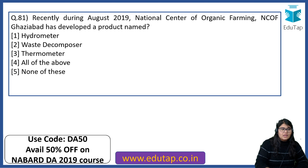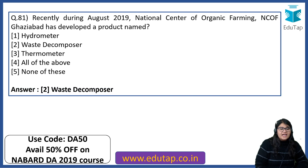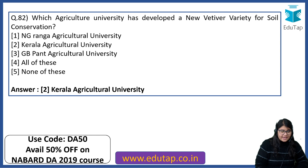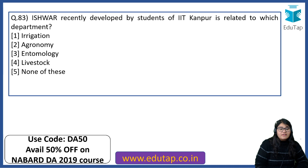During August 2019, the National Centre of Organic Farming, NCOF Ghaziabad, developed a product called Waste Decomposer. Which Agriculture University developed a new vetiver variety for soil conservation? The right answer is Kerala Agricultural University. Ishwar, recently developed by students of IIT Kanpur, is related to which department? The right answer is irrigation.